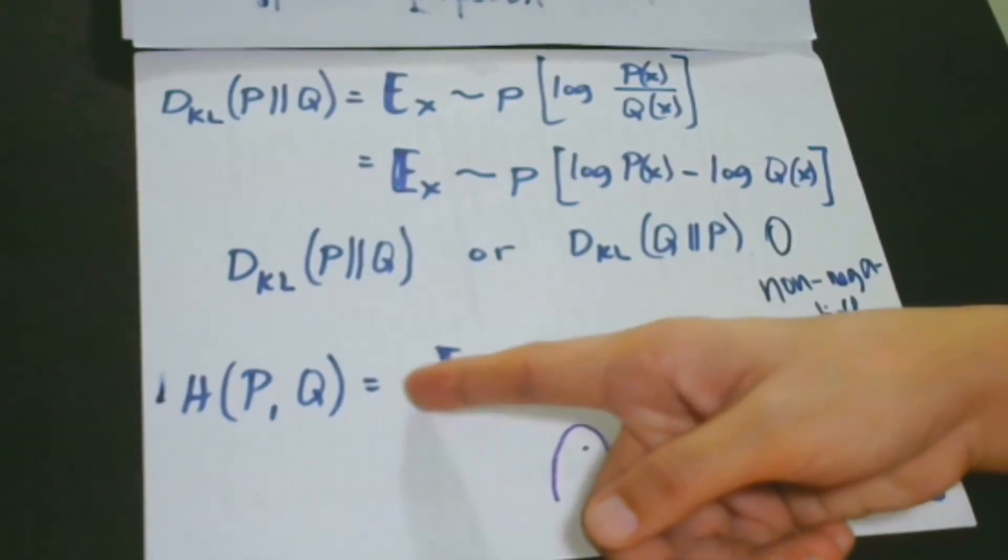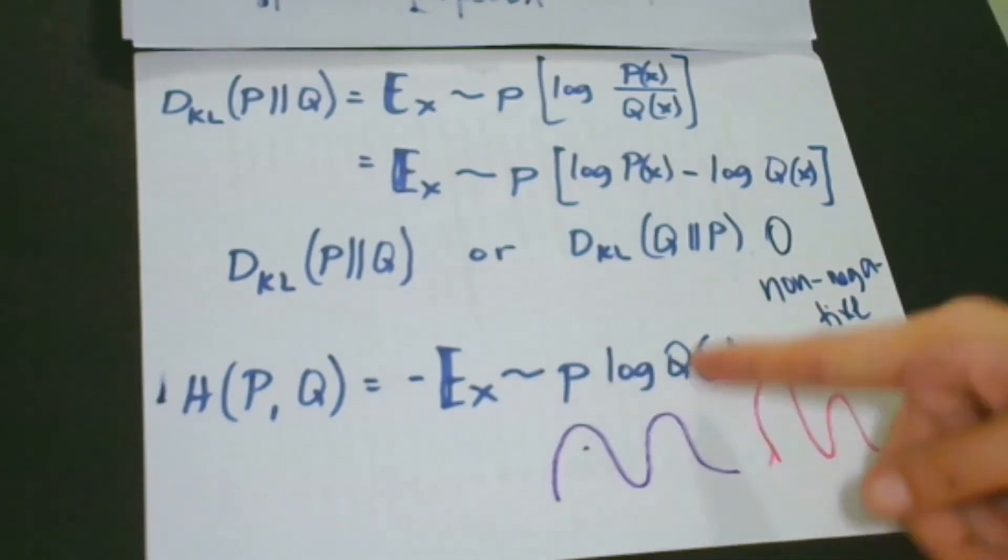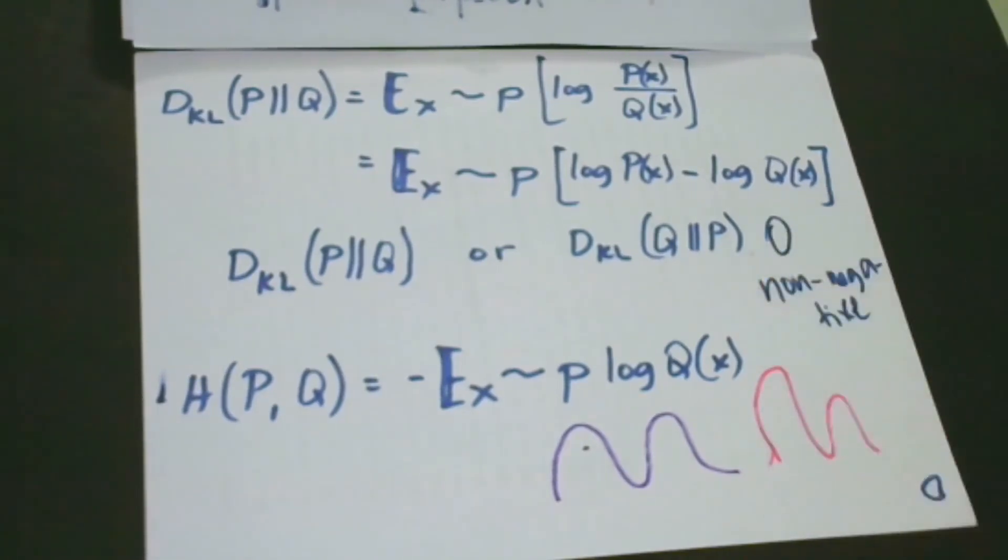You can see here the negative expectation of P log Q(X). So as you could see, this term or this statement lacks the term on the left. So what is missing? Let's examine.